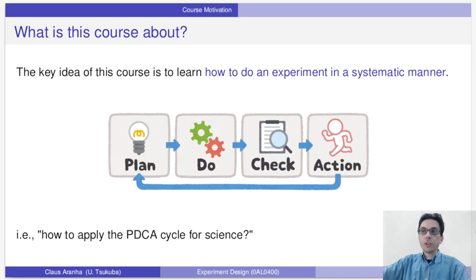So what I want to teach you is how to think of a scientific experiment in the same way. First, we plan our experiment carefully. And then we execute this experiment following that plan. After that, we verify the results of the experiment. And finally, we act on these results, which means that we can do more experiments or maybe write a paper or a thesis.